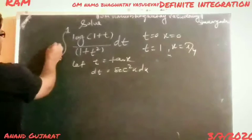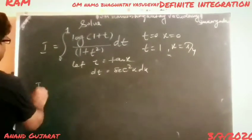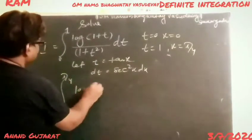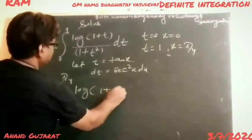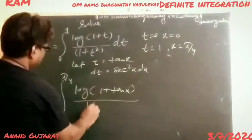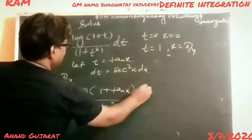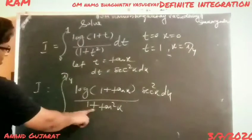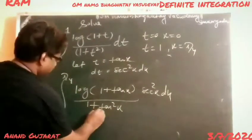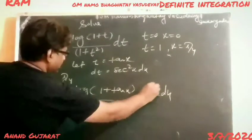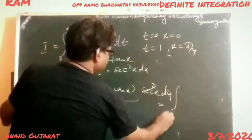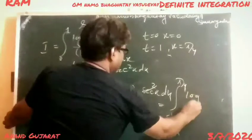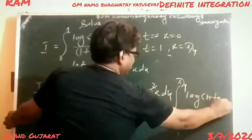Suppose this integral is equal to i. Therefore i = integration from 0 to π/4 of log(1 + tan x) upon (1 + tan²x) times sec²x dx. Now we know that 1 + tan²x = sec²x, so these cancel each other, and we can write i = integration from 0 to π/4 of log(1 + tan x) dx.